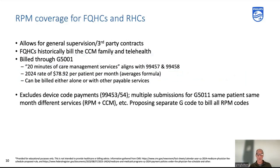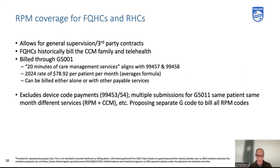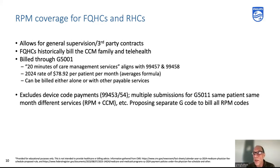To summarize what we just looked through: these are the so-called code sets now lined up with RPM — same patient, same month, separate 20 minutes. Transitioning to RPM coverage for FQHCs and RHCs, what we're seeing is the theme CMS has put to these codes: the care management aspect of RPM and CCM codes, allowing general supervision and third-party contracts. FQHCs historically bill the CCM family, and during COVID — now extended — FQHCs can also bill for telehealth.